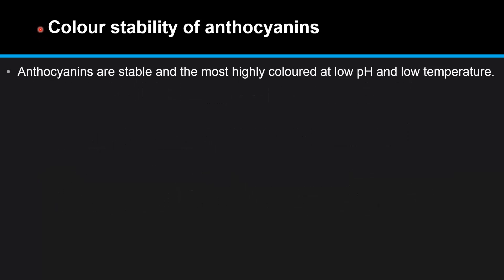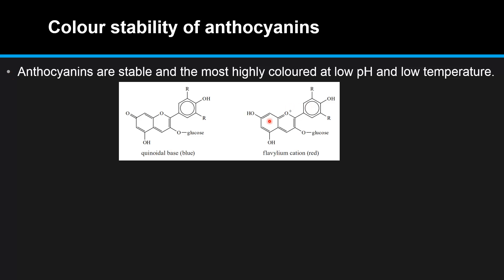We will start with the color stability of the anthocyanins. Anthocyanins are stable and the most highly colored at low pH and low temperature. In acidic conditions the flavilium cation is bright red. In a basic solution the H⁺ ion from the OH group can be removed to form the quinoidal base, which is a blue color.